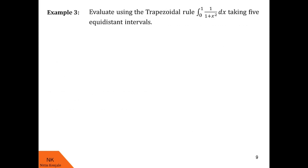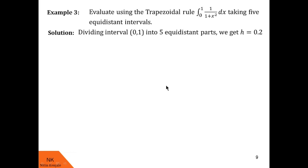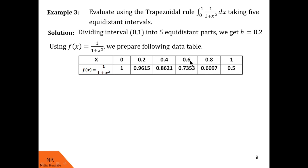Now let us proceed to the next example. Here we are asked to evaluate using the trapezoidal rule the integral of 1/(1+x²) dx over the limit 0 to 1, taking 5 equidistant intervals. We have to take these equidistant intervals from 0 to 1. Since we are dividing this interval into 5 equidistant parts, each part will be of distance (1 minus 0) divided by 5, that is 1/5, which equals 0.2. So h is 0.2. Taking h equals 0.2, after x0 we get x1 as 0.2, x2 as 0.4, x3 as 0.6, and so on up to 1.